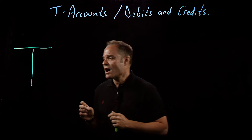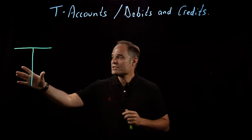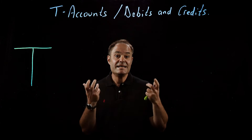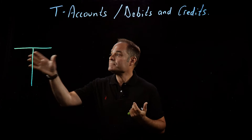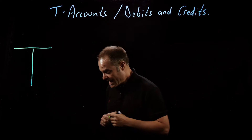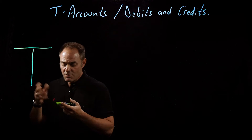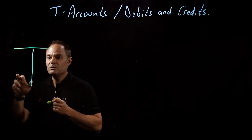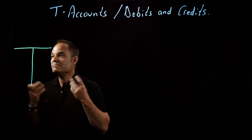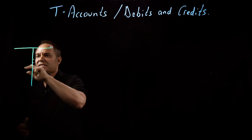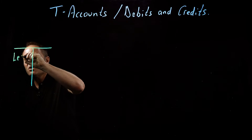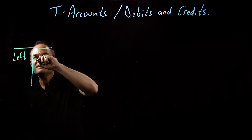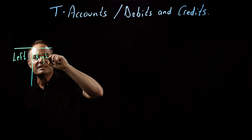A T-account, to jump right into it, is nothing more than a means of keeping track of the amounts that are kept in a particular account. It's called a T-account, obviously, because it's in the shape of a T. If we go over and take a look at our T-account over here, what we'll see is that it has two sides, and they have very technical names. This side over here is called the left side of the account, and this side over here, you guessed it, is the right side of the account.